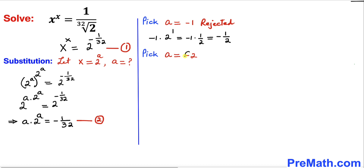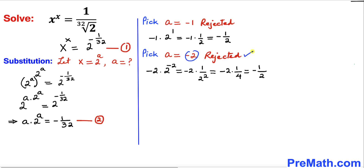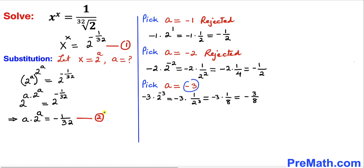Next we try a equals to negative 2 and plug it into equation 2. The left hand side becomes negative 2 times 2 power negative 2, which is negative 2 times 1 divided by 4, giving negative 1 divided by 2. This is not equal to negative 1 over 32, so a equals to negative 2 is rejected. Likewise, trying a equals to negative 3 gives negative 3 over 8, which also does not match, so a equals to negative 3 is rejected as well.